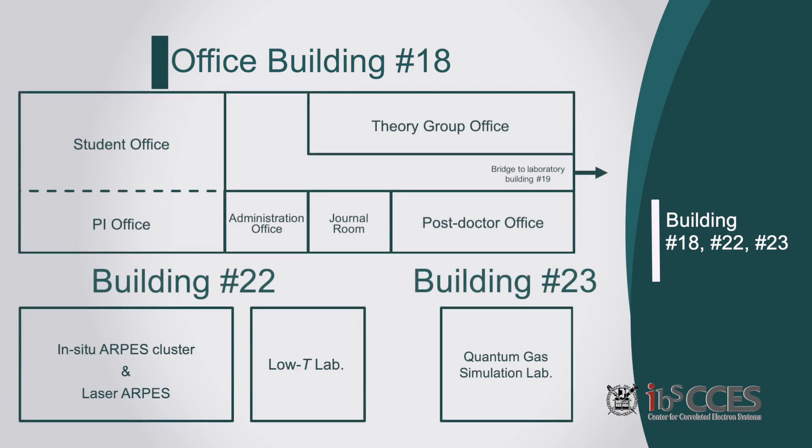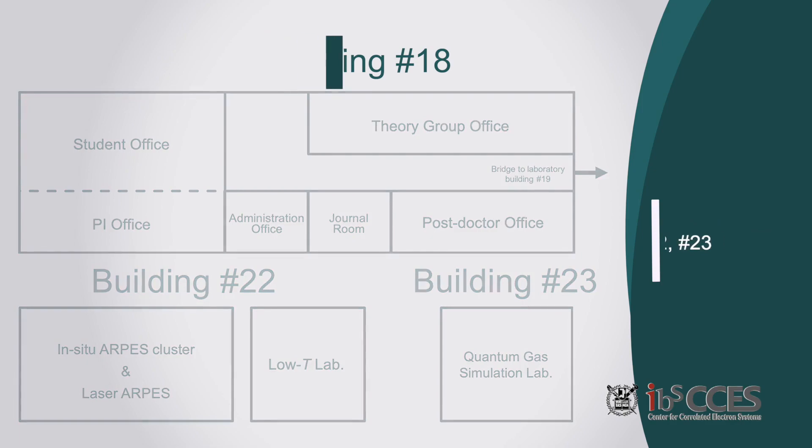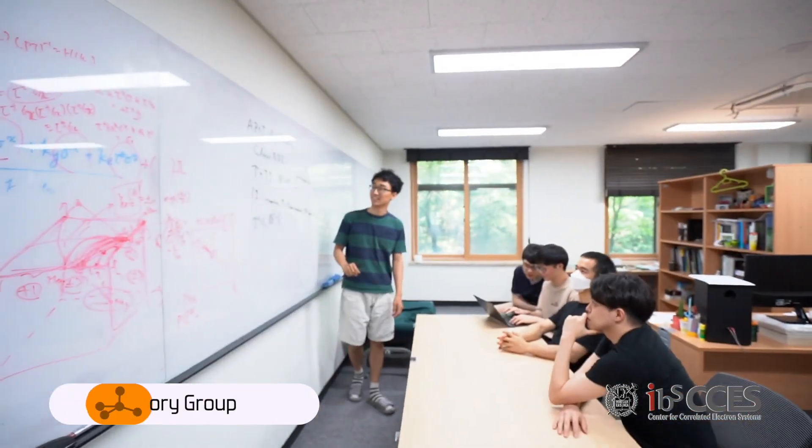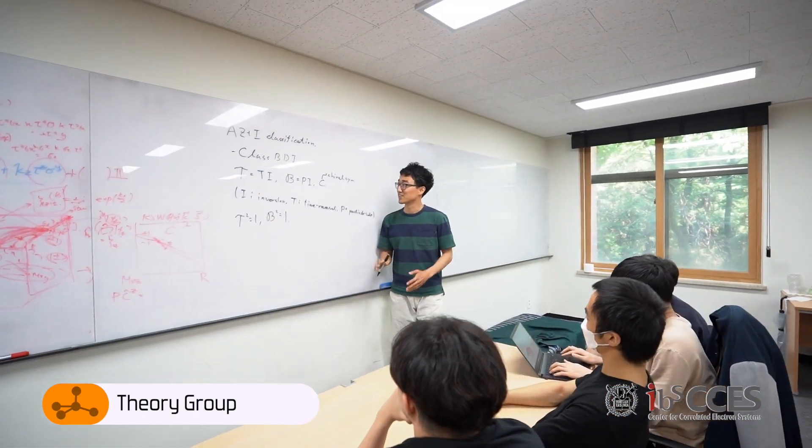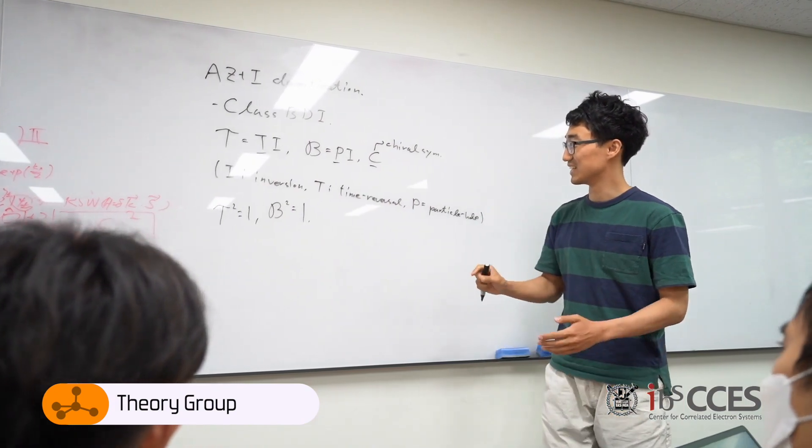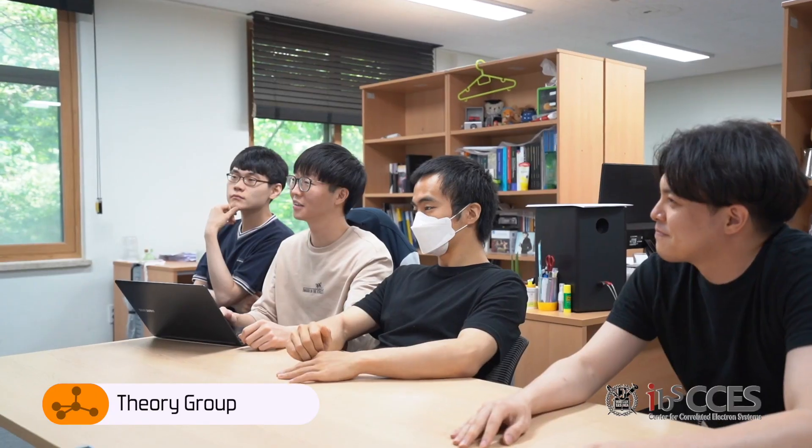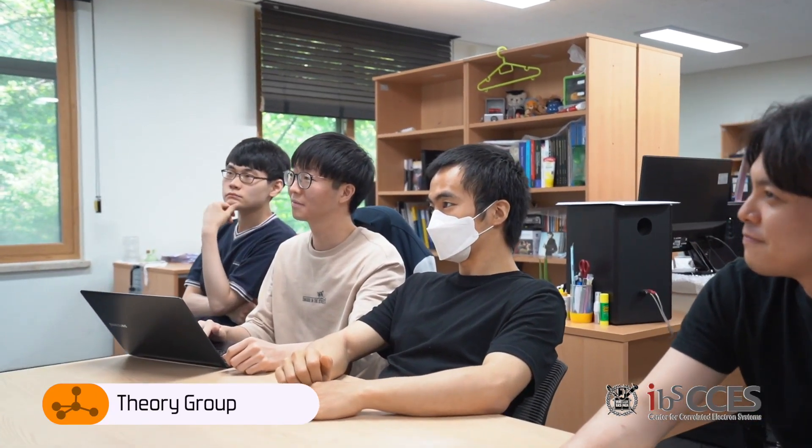As a last, in-situ ARPES cluster, laser ARPES and quantum gas simulation machines are located at Building 22 and 23. Besides the experimental groups, we also have the independent theory groups. They perform various calculations. Our infrastructure enhances the collaboration between experiment and theory.